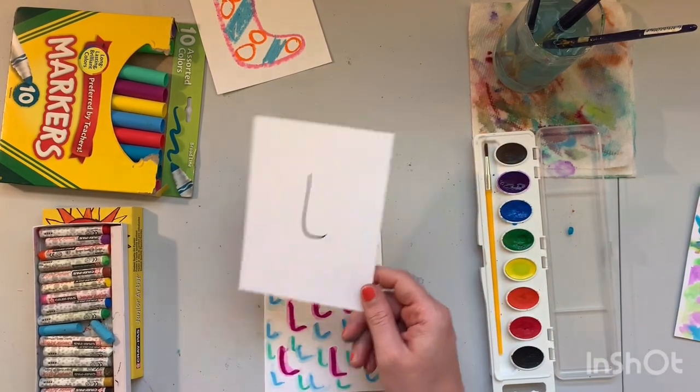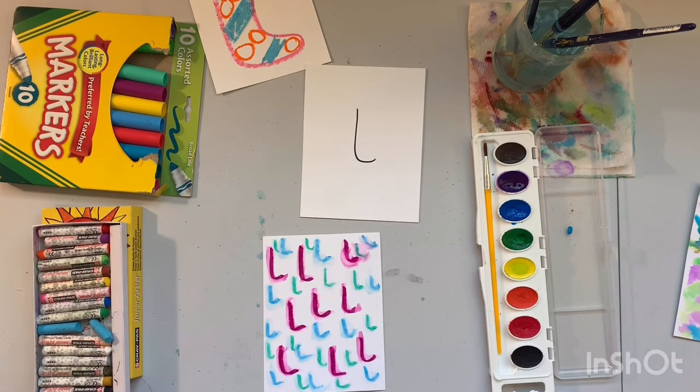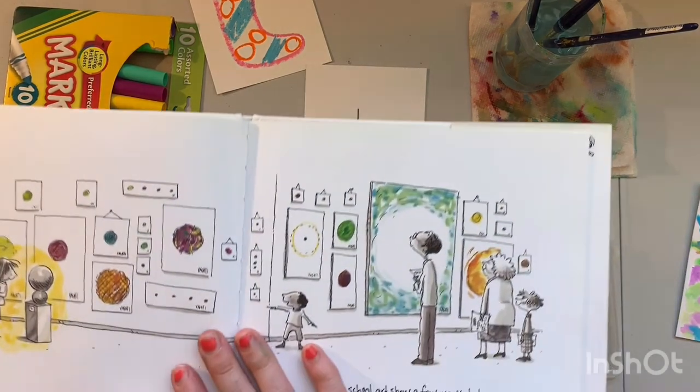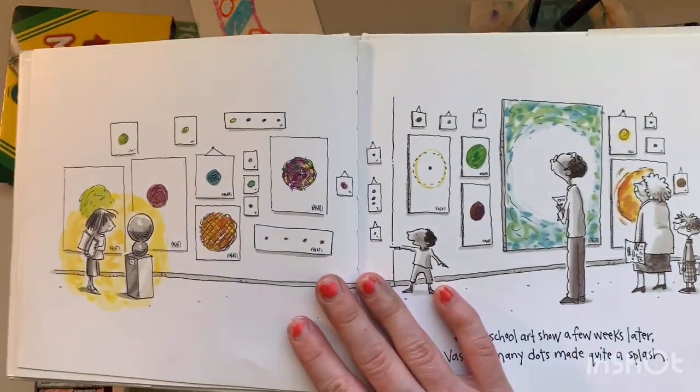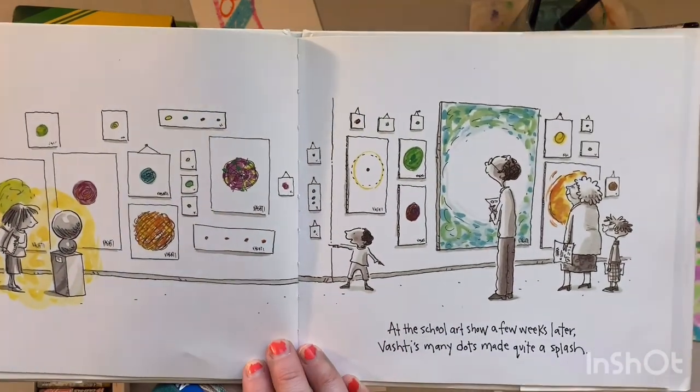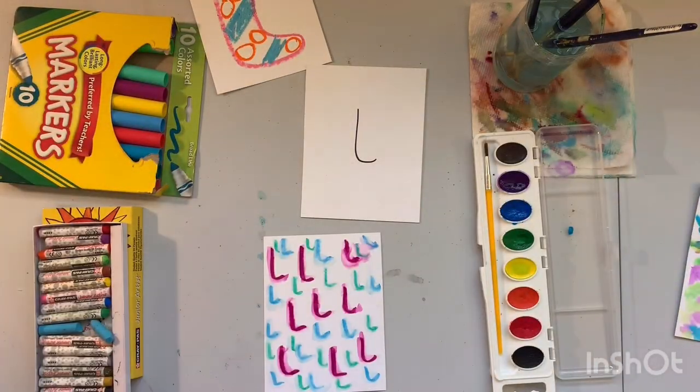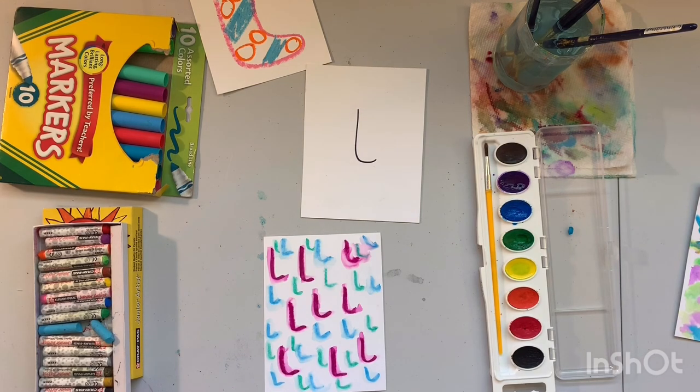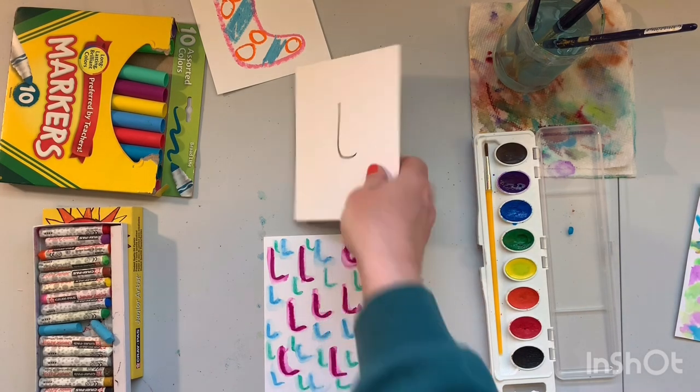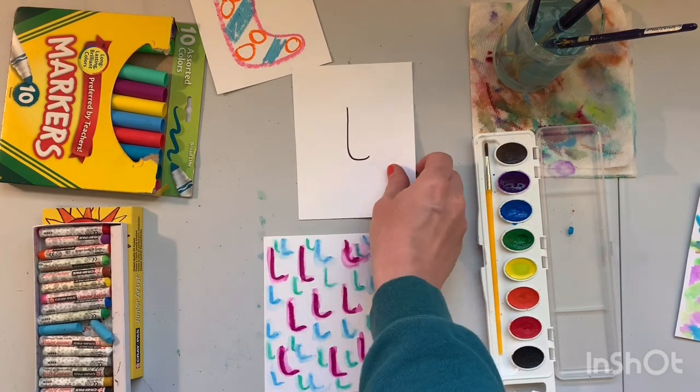Alright so I have made let's see one two three four five different versions of just this simple mark that I made. Now I think it would be so fun if we all hung up our different versions of our marks to make a kind of art show just like Vashti did in the book. So she hung all of her dots together. So I think it would be so neat if you guys made a bunch of different versions of your mark and hung them up somewhere in your house and took a picture and sent it to me or Miss Horesh. Or you could just lay it somewhere on a table that's probably what I'll do. And I'll put a picture up so you guys can see my mini art show made from my mark and you guys can make a mini art show from your mark.